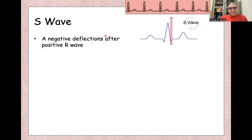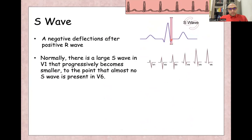S wave is a negative wave after positive R wave. So the next negative wave after the R wave is the S wave. And normally, S wave is large in right leads, V1 and V2, and it decreases or progressively becomes smaller towards the lateral leads until almost no S wave in V6.